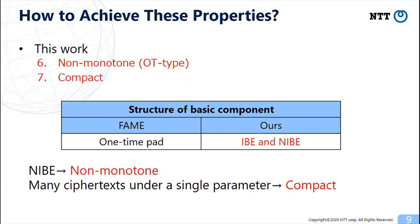Intuitively, a structure of a basic component in FAME can be seen as a one-time pad, while the counterpart of our schemes can be seen as a combination of identity-based encryption and its negation.